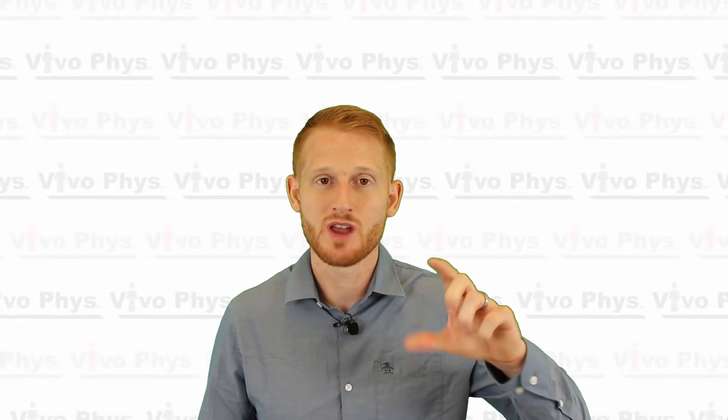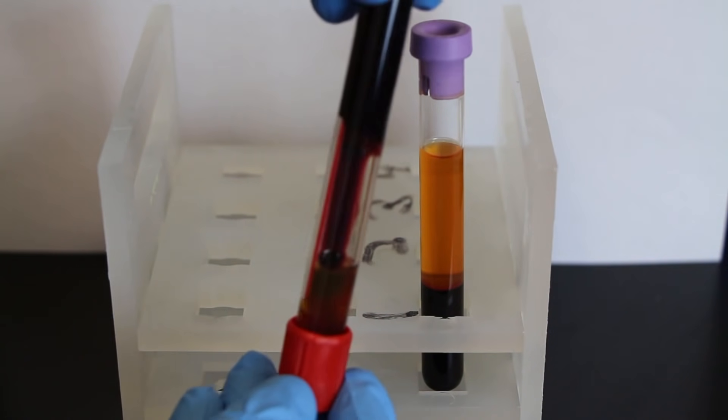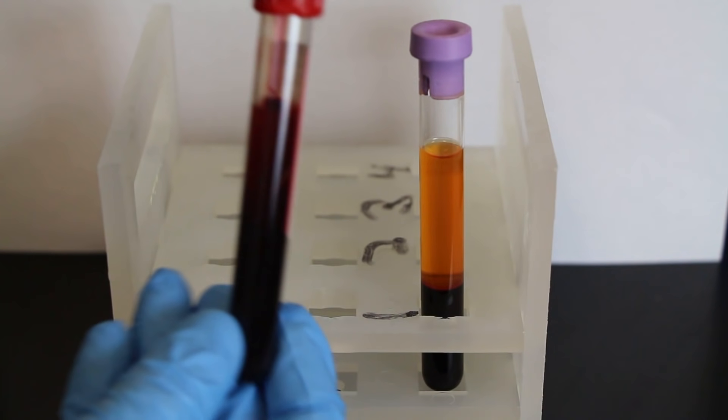When you're taking the tubes out of the centrifuge and to wherever your workstation is, or when you're working with them at the workstation, make sure that you never invert those tubes again. If you invert the tubes, you're going to see that the blood remixes partially, and essentially you're ruining your sample by doing that.